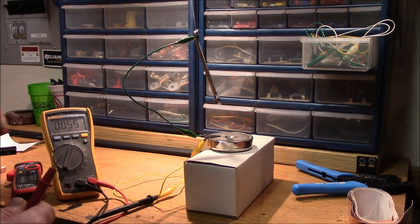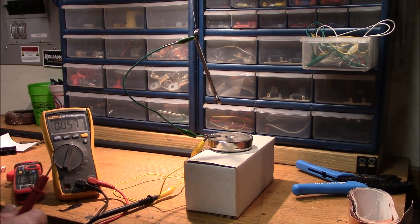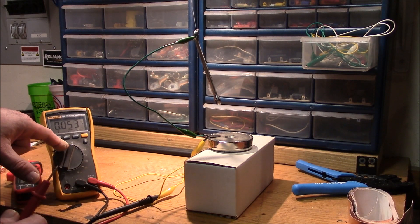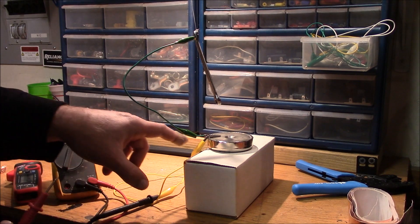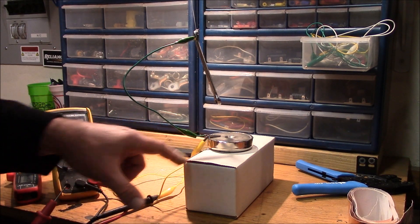All right, let's figure this one out. I've got my Fluke 117 true RMS multimeter hooked up to AC volts. I've got one test lead, the black one, directly on the magnet here.